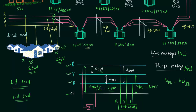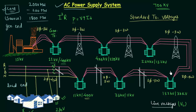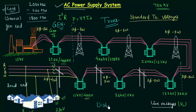Now let us talk about generation, transmission, and distribution. In this diagram, the generation part covers everything before the step-up transformer. From after the generator transformer up to a certain substation is the transmission part. From there to the load is the distribution part. You can also subdivide these into primary and secondary transmission, and primary and secondary distribution. Power system is fundamentally about generation, transmission, and distribution.